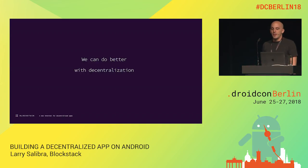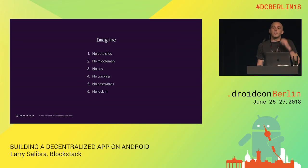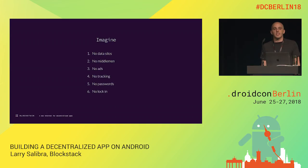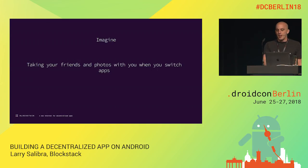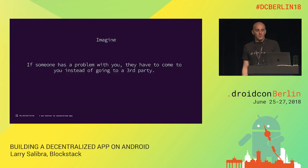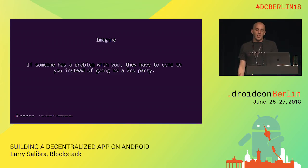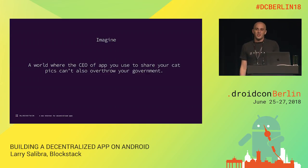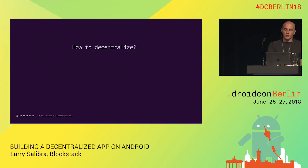We think we can do better with decentralization. Imagine a world with no data silos, the ability to move data between apps, no middlemen, no tracking, no passwords for every account, and no lock-in as a user. You could say: I don't like this app anymore, I'm going to take my friends, my photos, and my documents and move to a new app without having to recreate my digital life. We also want a world where if someone has a problem with you, they have to come to you directly rather than going to Google to shut down your account. And we want a platform where cat pics don't have enough power to change elections or overthrow governments.